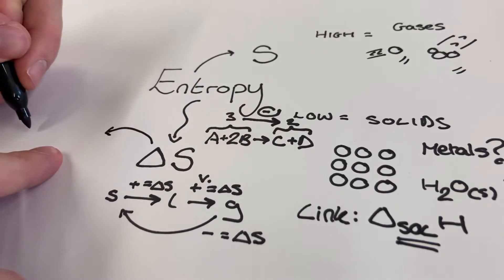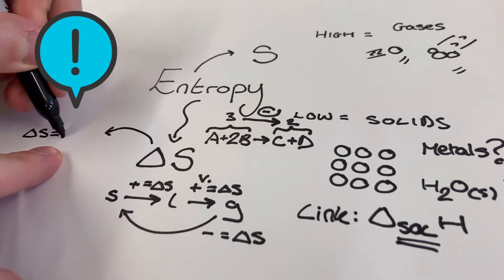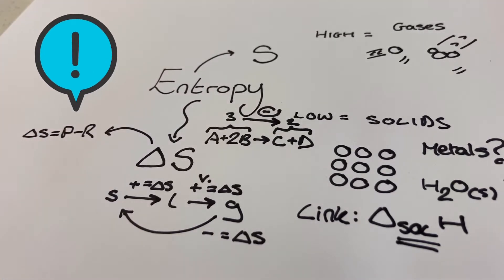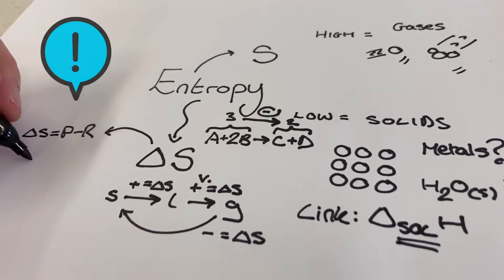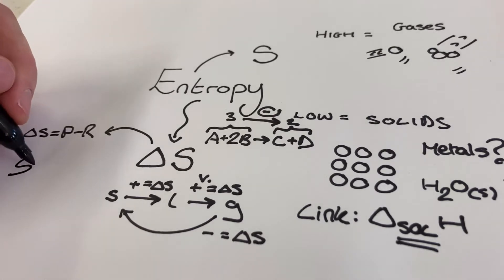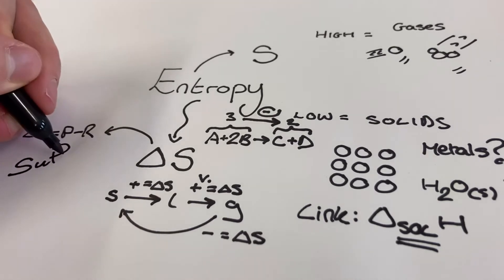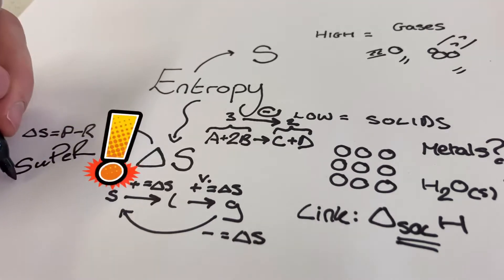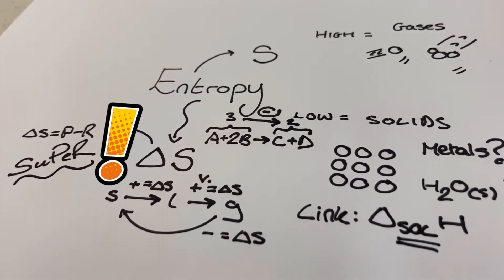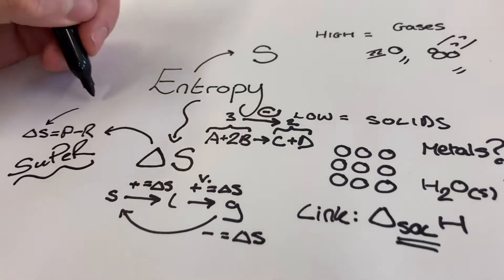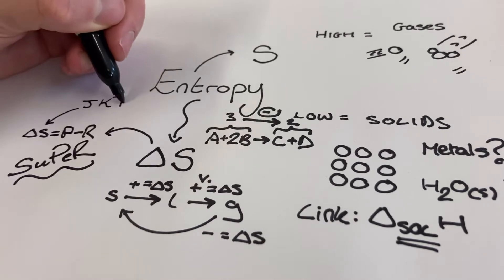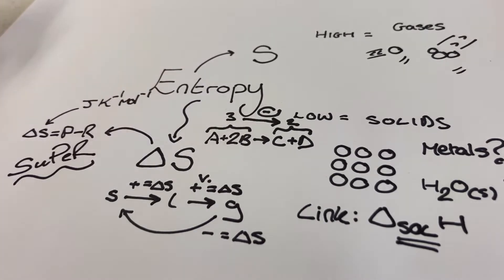You also need to be able to calculate the entropy change for a chemical reaction using the expression ΔS equals entropy of the products minus entropy of the reactants. A good way to remember this is that your entropy change calculation is super: so that's entropy S equals products minus reactants. Don't forget that even though most of your entropy values are going to be positive numbers, there are some negative ones out there, but entropy changes can be positive or negative. The units of entropy and entropy change are joules per Kelvin per mole. Don't forget that joules bit because it's going to be very important later with the free energy change calculation.